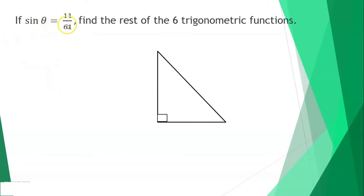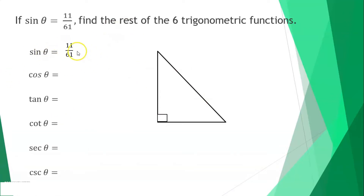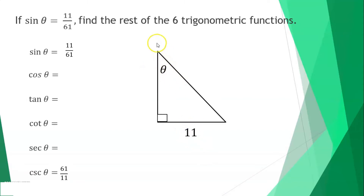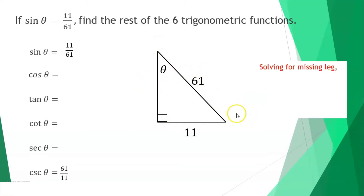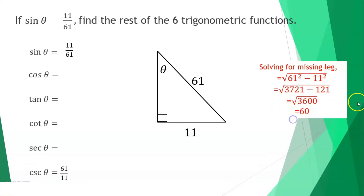If sine theta equals 11/61, find the rest of the six trigonometric functions. Since sine is opposite over hypotenuse, the opposite is 11 and hypotenuse is 61. The cosecant (inverse of sine) is 61/11. Using the Pythagorean theorem: the missing leg equals the square root of 61² − 11² = square root of 3600 = 60.